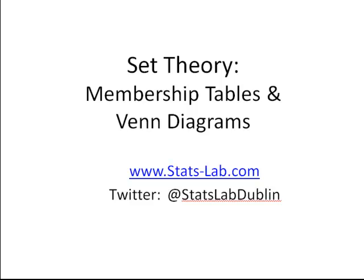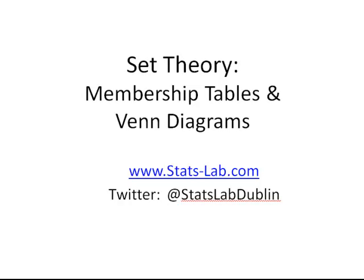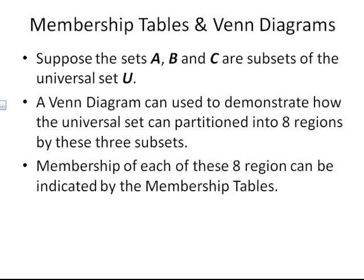In this presentation we are going to look at membership tables and Venn diagrams and see how they interact with each other. We are going to consider the sets A, B and C, which are subsets of the universal set U. A Venn diagram can be used to demonstrate how the universal set can be partitioned by these three subsets into eight disjoint regions. Membership of these regions can be indicated by membership tables.